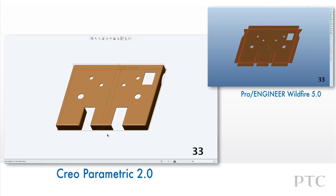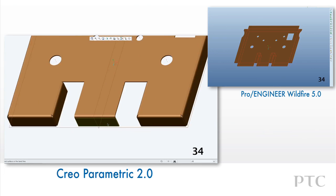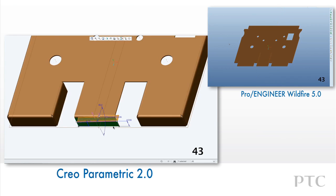Creating a bend feature is also easy by snapping lines to the edges of walls. We can still sketch a section if we want to as well. Once the bend is defined, a preview allows us to refine the direction and angle and make sure it's right the first time.